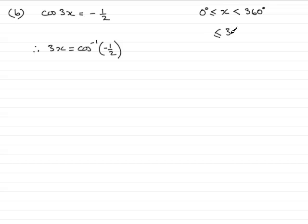But I need to times the zero by 3, so three zeros are zero. And if I times 360 by 3, I get 1080 degrees. So I've got a new range that I've got to consider for 3x between 0 degrees and 1080 degrees.